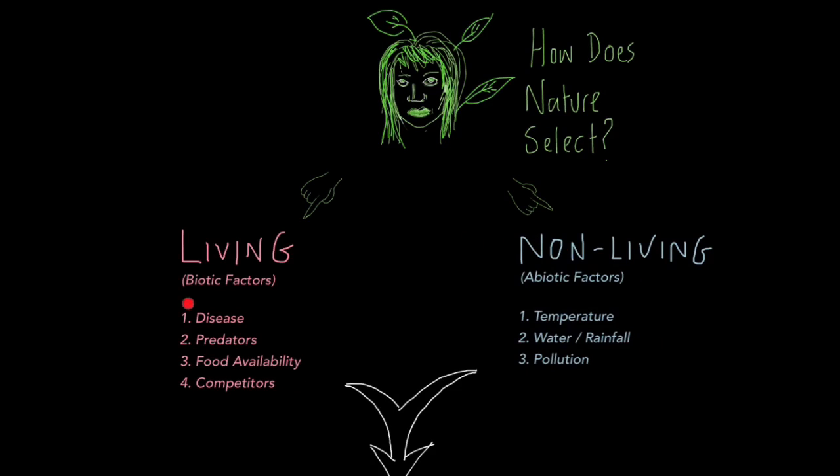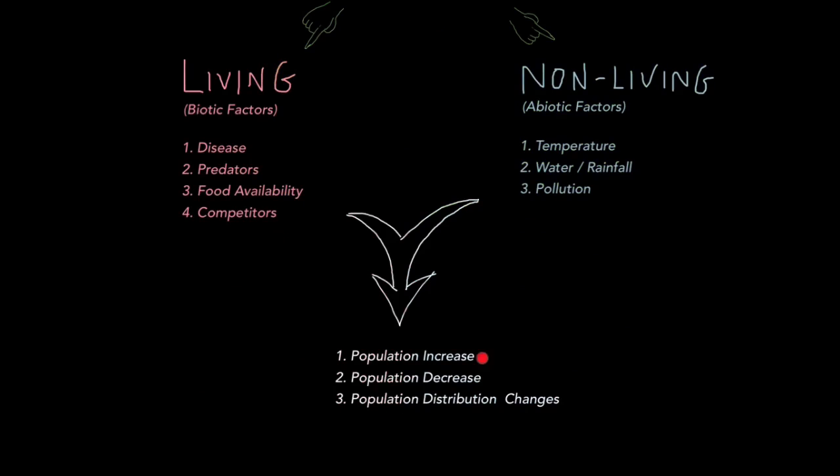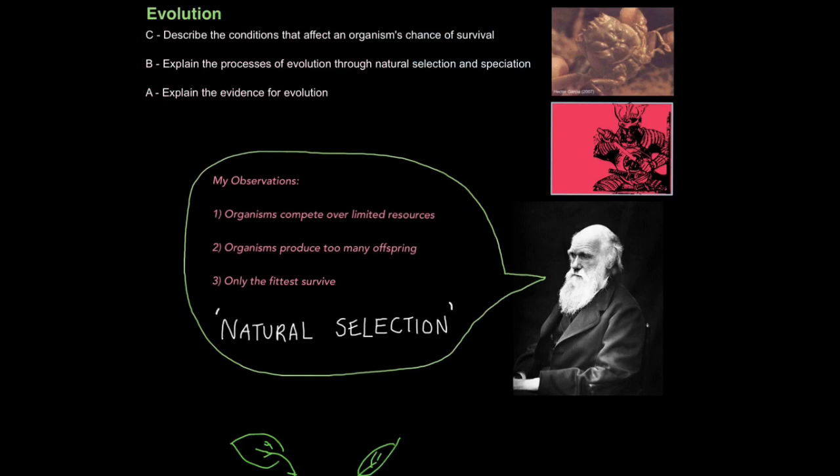All these factors act on a population. They can lead to a population increase. For example, if there's more food available, the population will grow. They can cause a population decrease. For example, if there are more predators or more disease, the population will shrink. They can also affect population distribution. For example, climate change means certain areas can be colonized by organisms that usually inhabit hotter areas. Certain species are actually migrating away from the equator and finding homes elsewhere. So that's what we mean by environmental conditions that affect an organism's chance of survival.